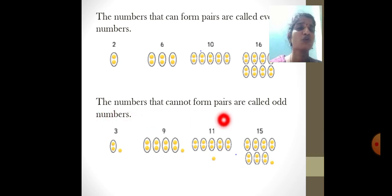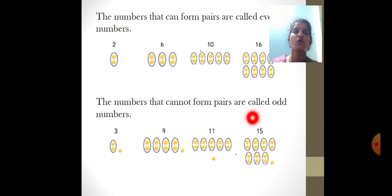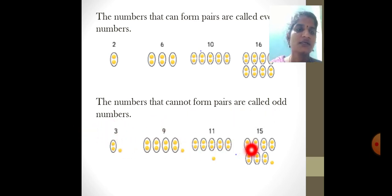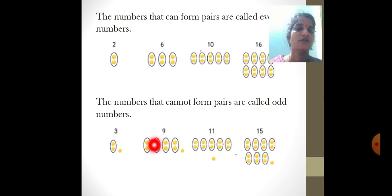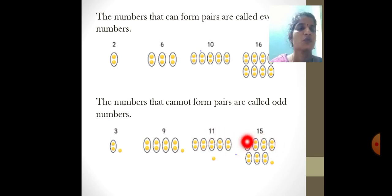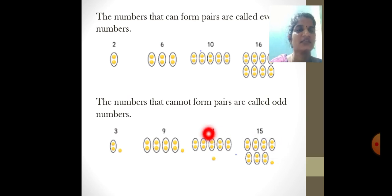The numbers that cannot form pairs are called odd numbers. Here you can see one unpaired biscuit remains in each case — for example, 9 and 5 biscuits each have one left over and cannot all be paired. Those numbers are called odd numbers.